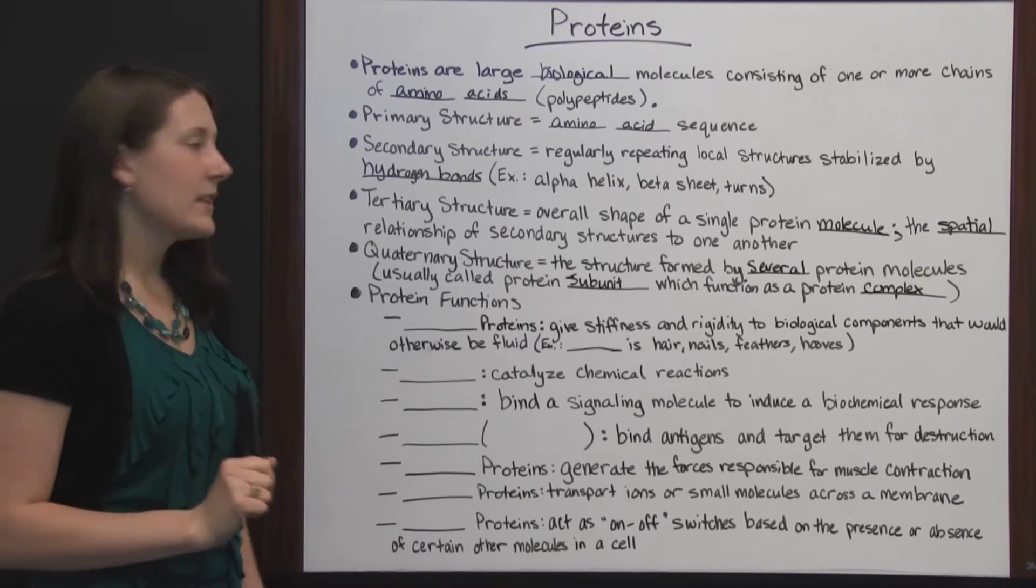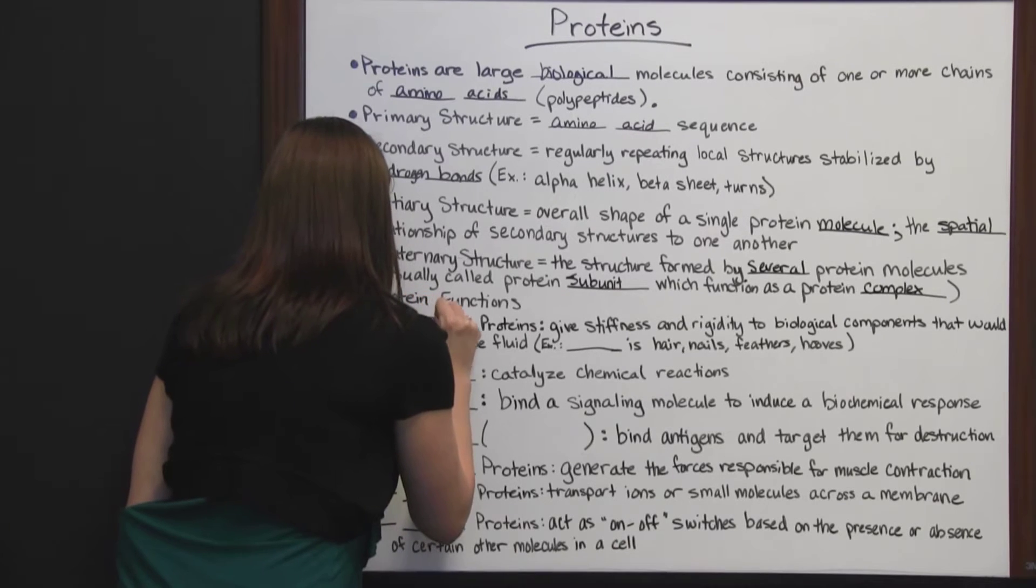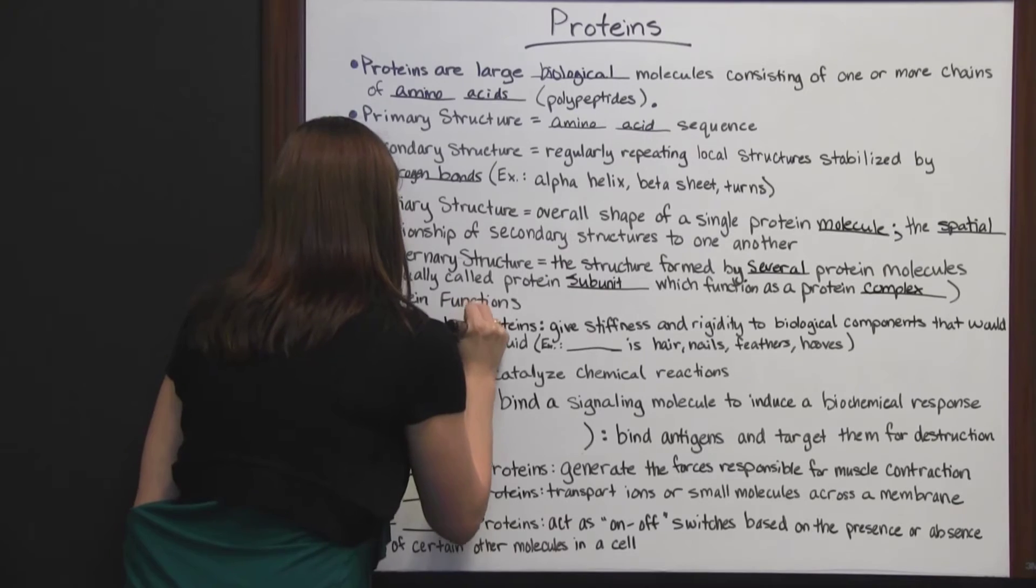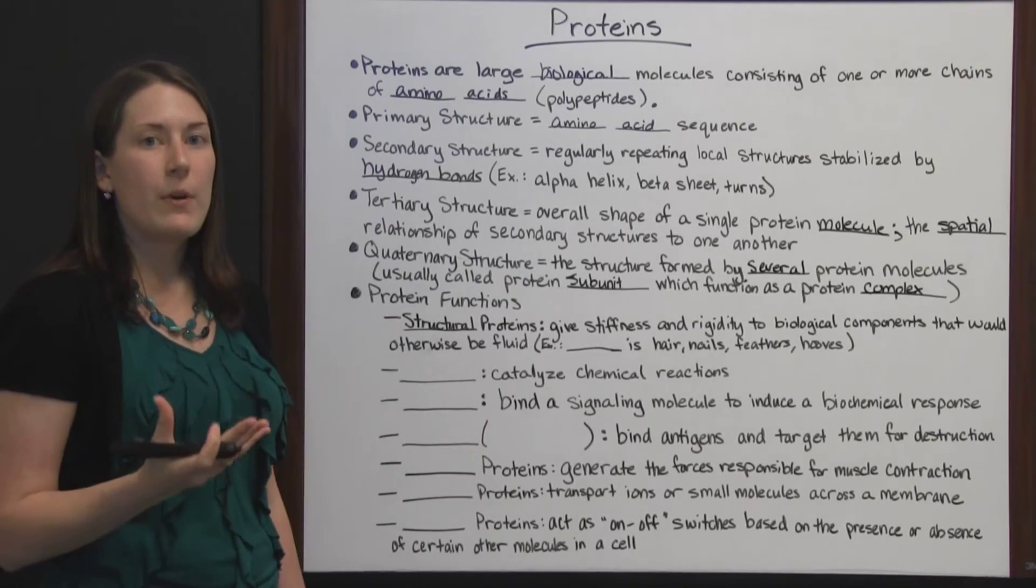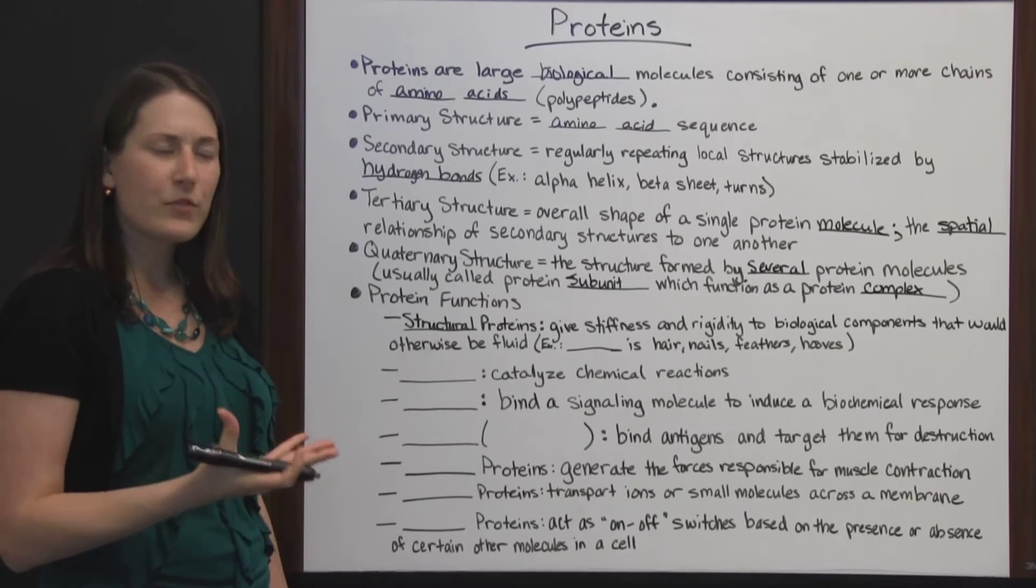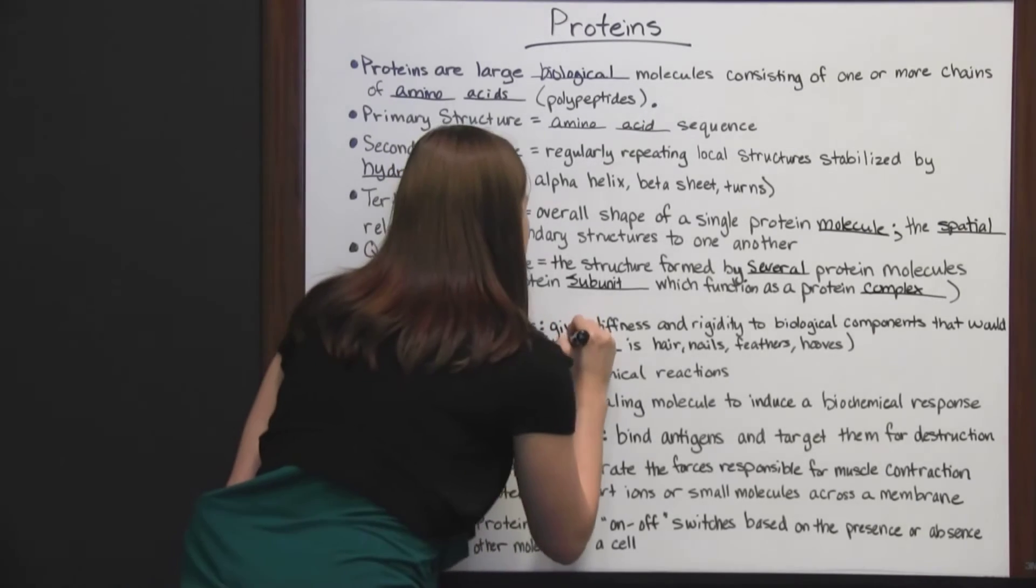Now let's look at some of the functions of proteins. We have structural proteins. These give stiffness and rigidity to biological components that would otherwise be more fluid. They wouldn't have a lot of shape to them. An example is keratin.